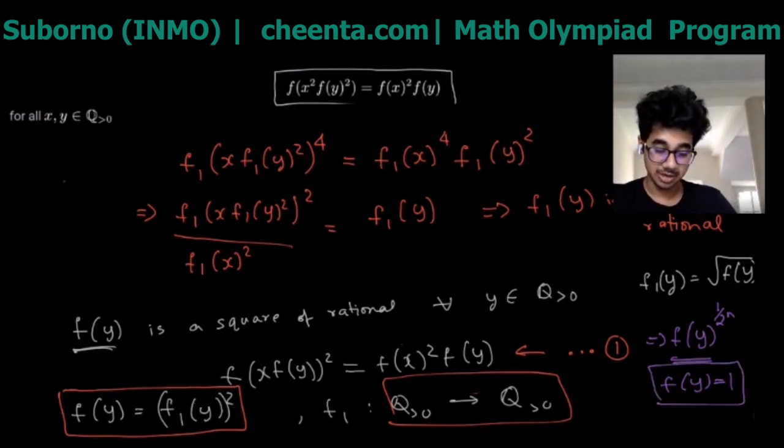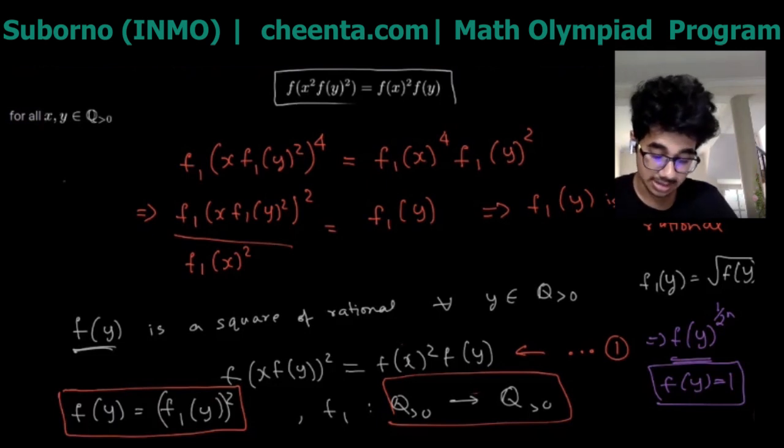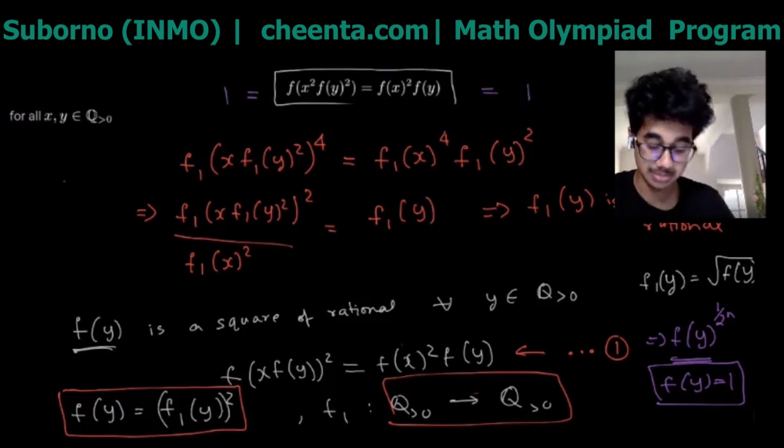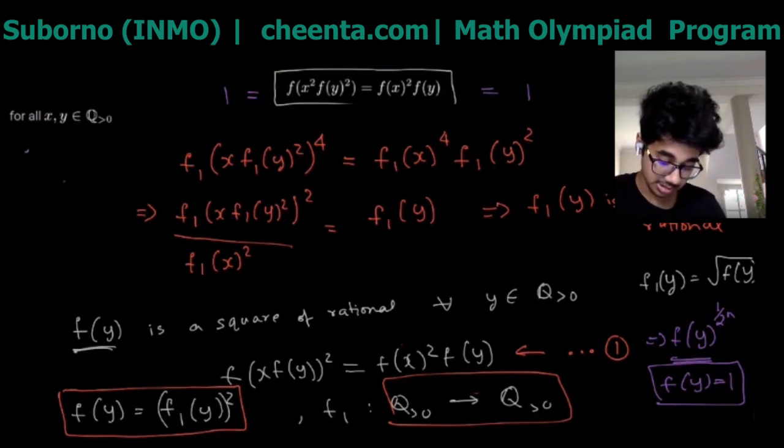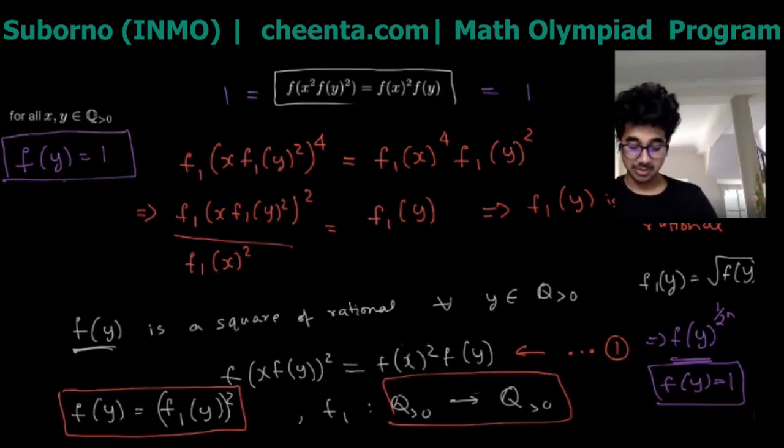And at the end of solving a functional equation, we need to always try and plug it in the original problem and see if it works. And it actually indeed works, because the left-hand side just becomes equal to 1 and even the right-hand side becomes 1. So the only solution has to be f(y) equal to 1. Okay, so that was the problem.